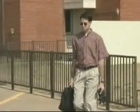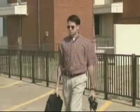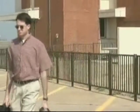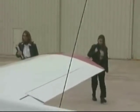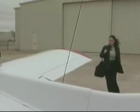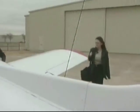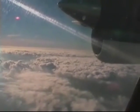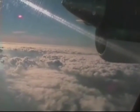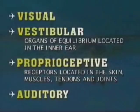Humans possess the natural ability to maintain body orientation and posture in relation to their surrounding environment, whether at rest or in motion. Good spatial orientation is due to effective perception and interpretation of your senses: visual, vestibular, proprioceptive, and auditory information.